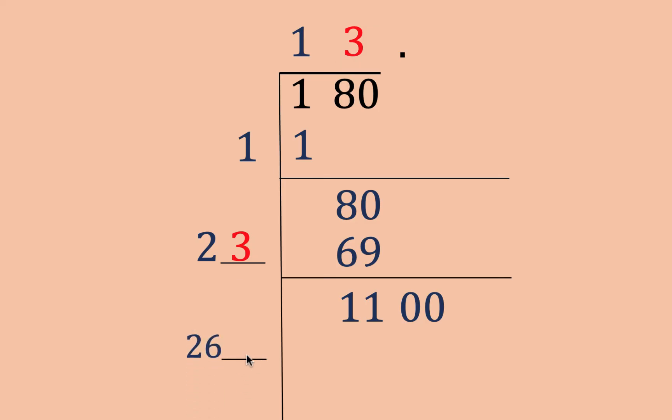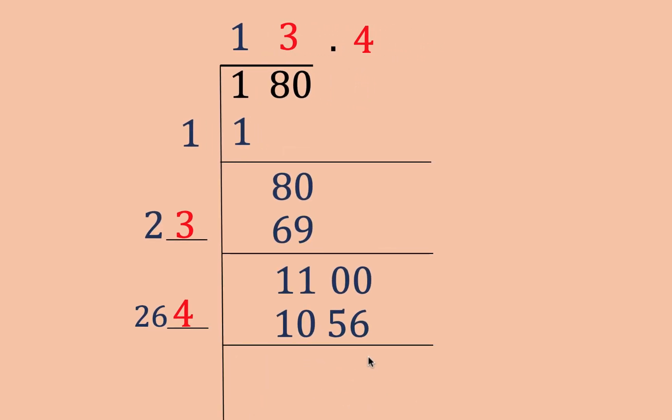Then you double this 13 to get 26. And then we need a digit here also that is the same as the number here so that when you multiply, that number is closest to 1,100 but less than 1,100. And that number must be 4 because 4 times 264 is 1,056. And then we subtract. That is equal to 44. And let's put two zeros again.